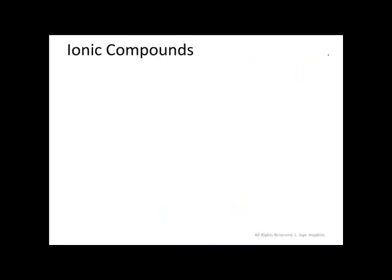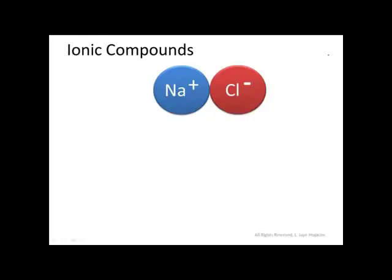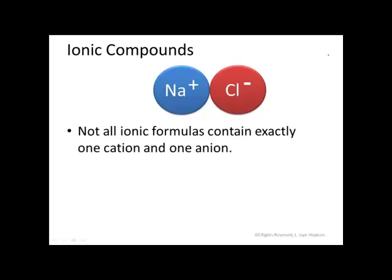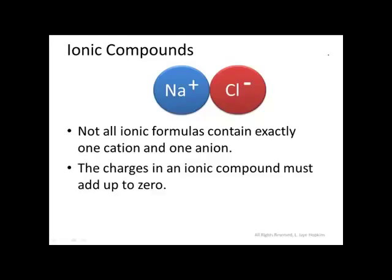Sodium chloride is a great example of an ionic compound — it's common, and it's relatively simple, consisting of only one cation and one anion. In reality, not all ionic formulas contain exactly one cation and one anion. What drives the chemical formula for all ionic compounds is the need for the positive and negative charges to cancel out. The charges in any ionic compound must add up to zero. In sodium chloride, sodium has a +1 charge and chloride has a -1 charge, so simply putting one sodium and one chloride together allows the charges to cancel.